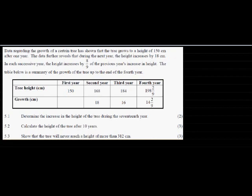The data further reveals that during the next year the height increases by 18 cm. In each successive year the height increases by 8/9ths of the previous year's increase in height. The table below is a summary of the growth of the tree up to the end of the fourth year.